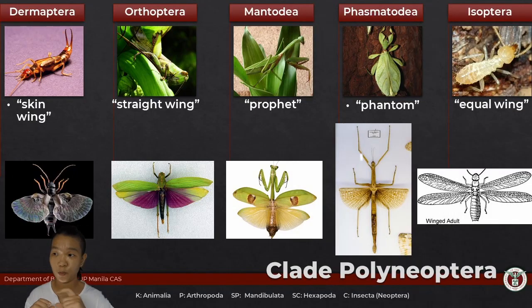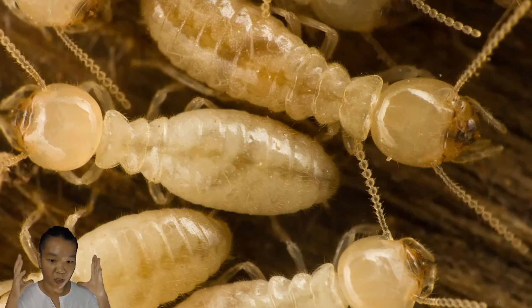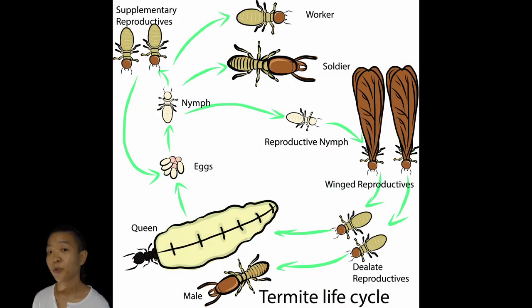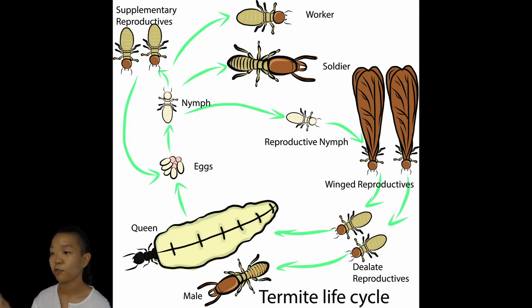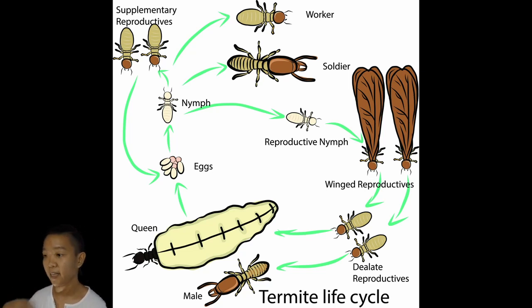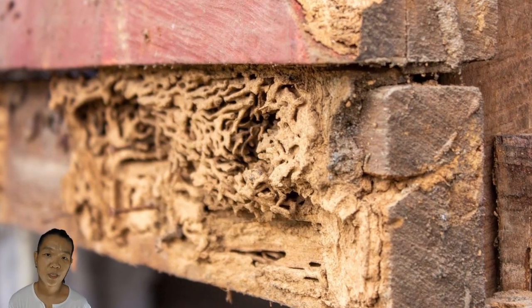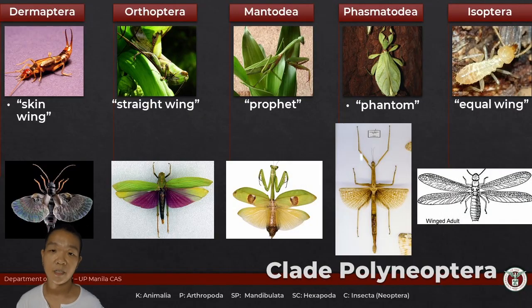Termites exist in colonies with members that look different from each other. The queen has a big abdomen and primarily lays eggs. The soldiers have clear, pale bodies but huge heads. The reproductives — males and females — have darker bodies and are the ones with wings; they are the future queens. At a certain point, the queen produces next-generation queens and their mates. The males mate with the females; the female stores all the sperm she'll need for her entire life, and then the male dies. That female eventually becomes a new queen and sets up her own colony. Termites have special bacteria in their gut that can break down plant tissue, which is why they can eat wood. And that is subclade Polyneoptera.